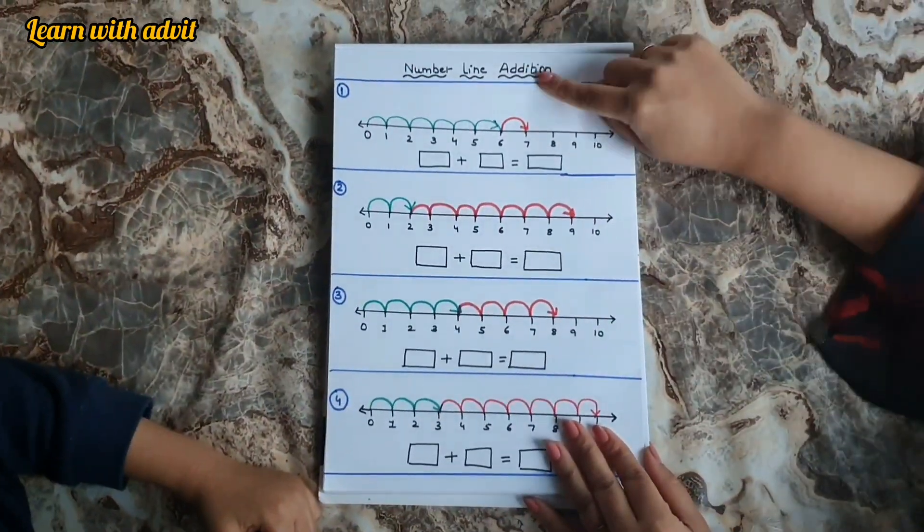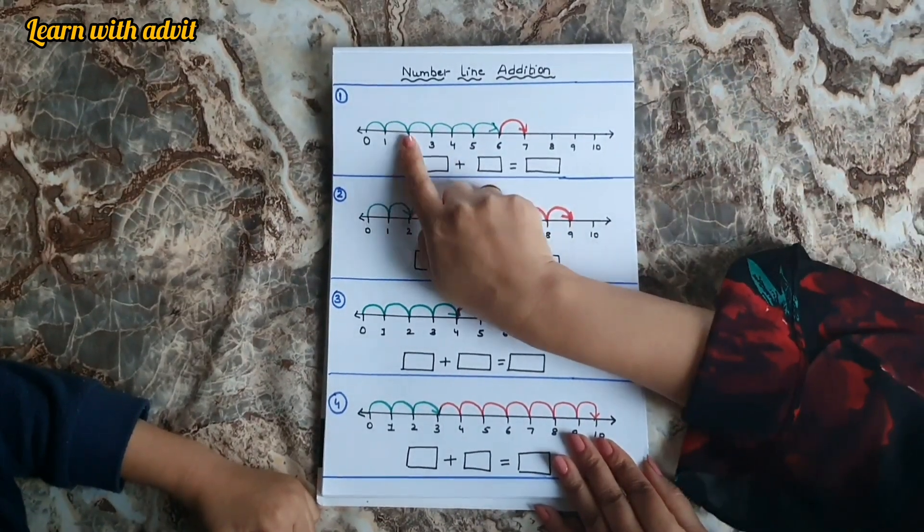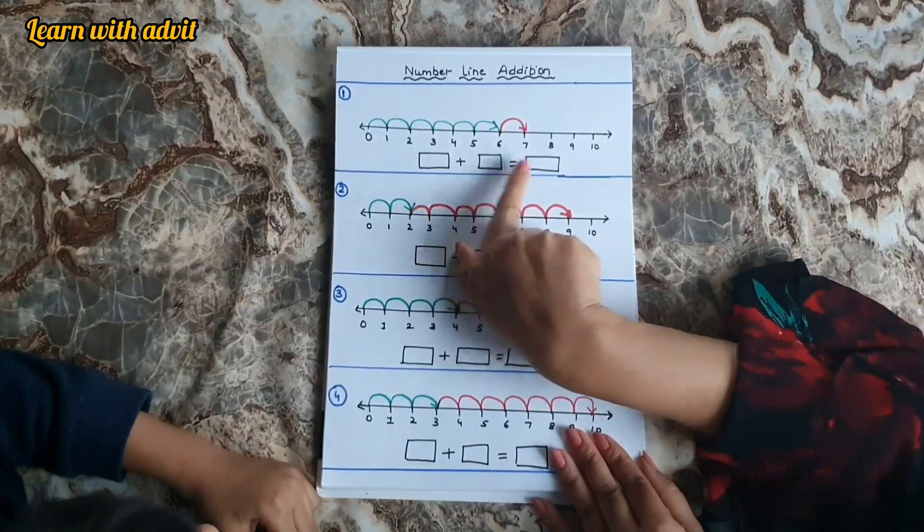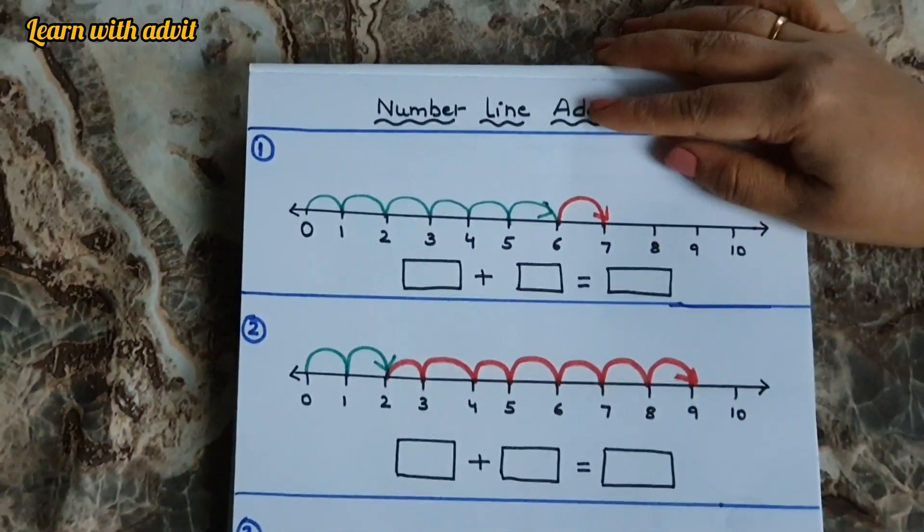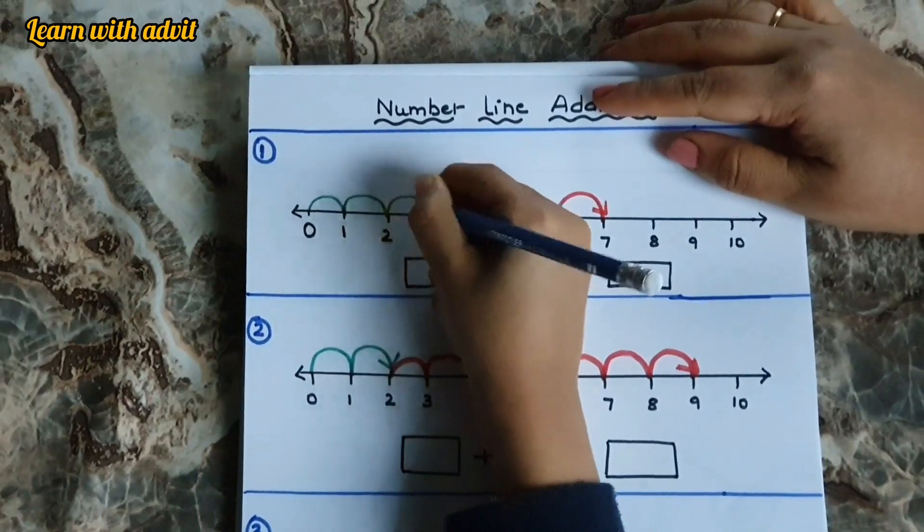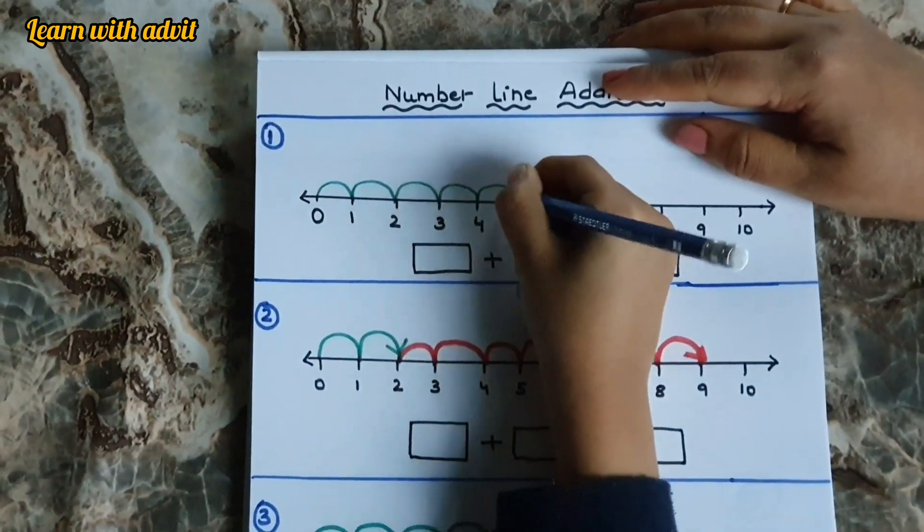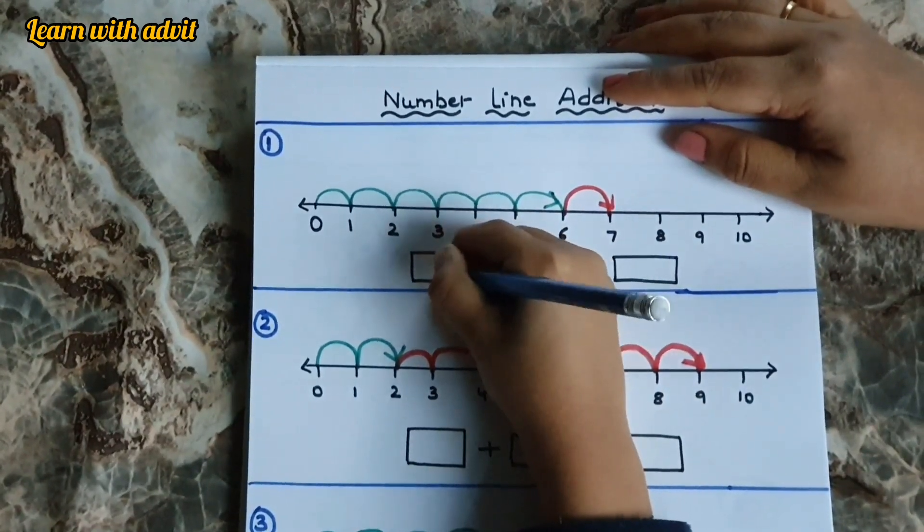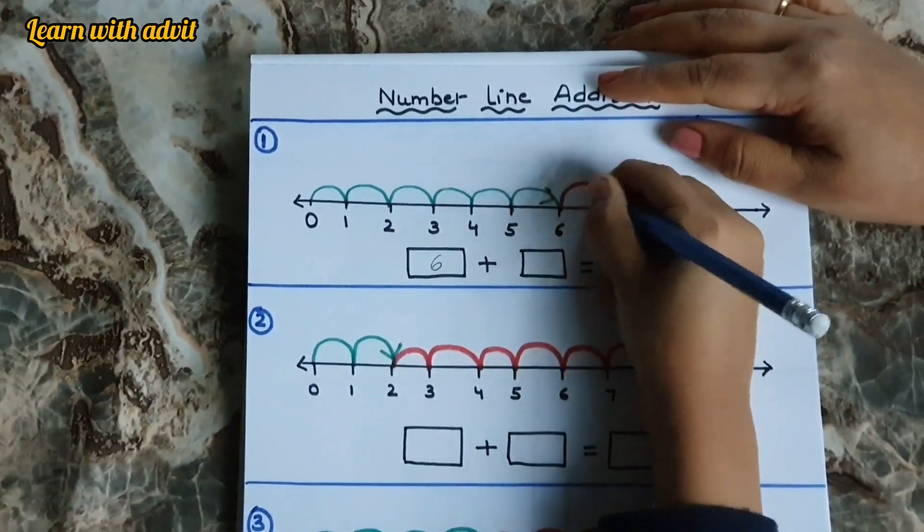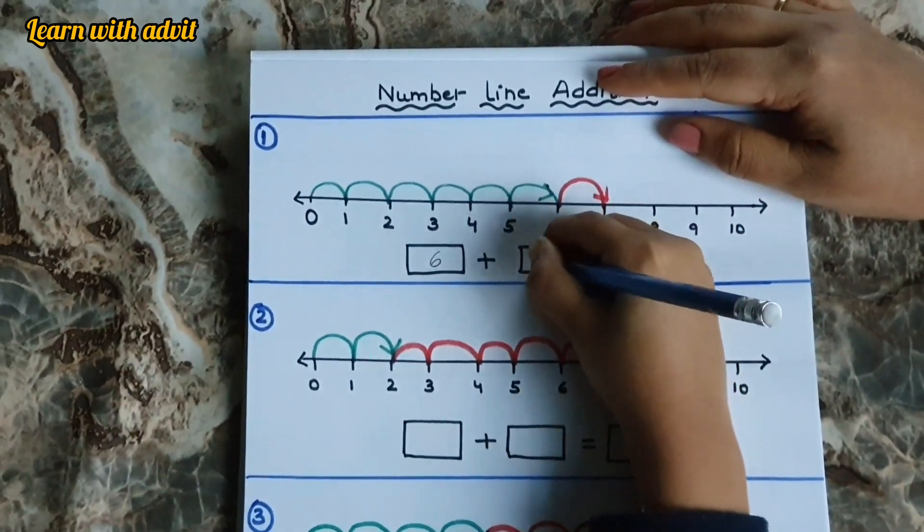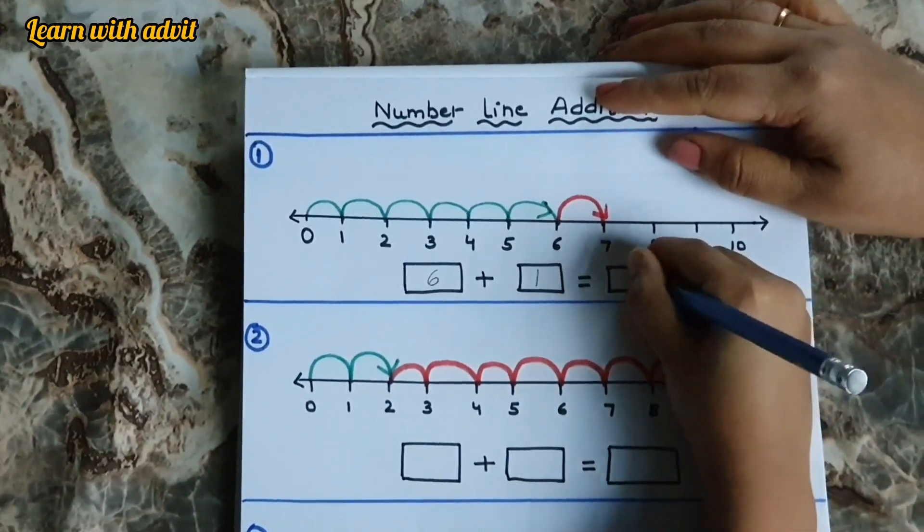So this is number line addition. In 2 colors. So first count and write down and solve it. So 0, 1, 2, 3, 4, 5, 6. So 6 plus 1 jump. So 6 plus 1 equals 7. Good job.